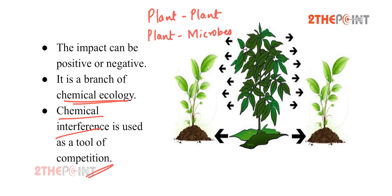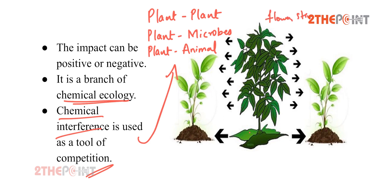Chemical interference is also observed in plant-microbes interaction and plant-animal interactions. Allelochemicals are found in the flowers, stem, and leaves of a plant. These are beneficial in agriculture for weed management, mulching, intercropping, and crop rotation.